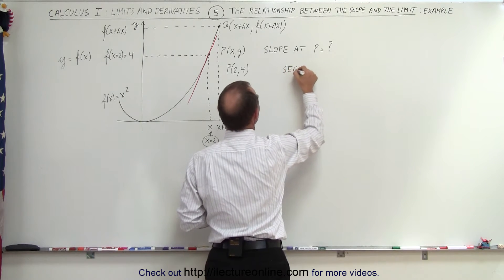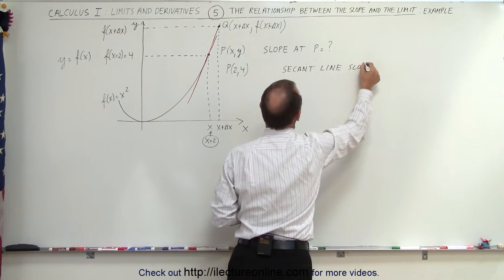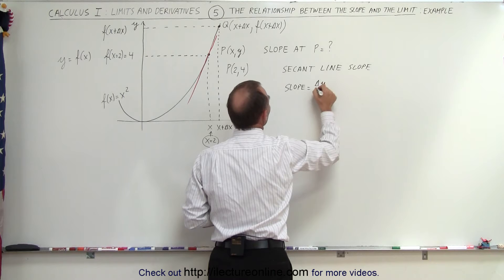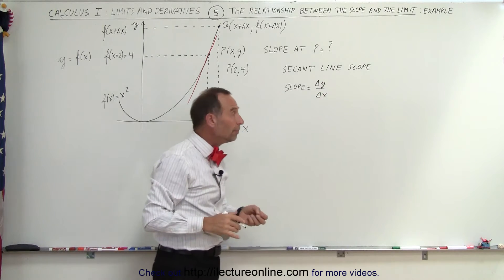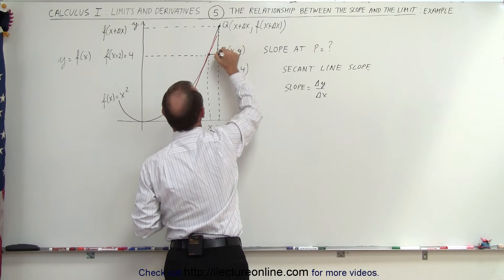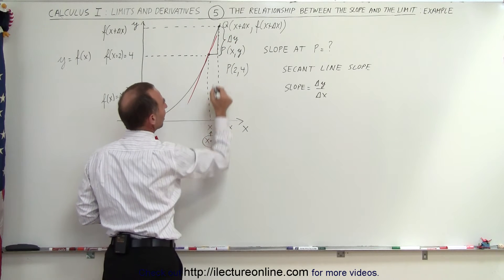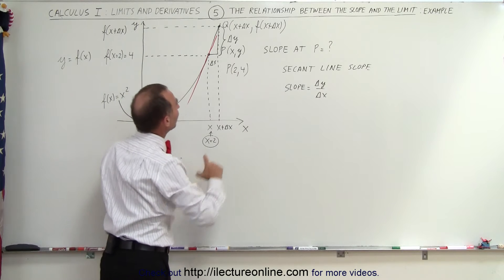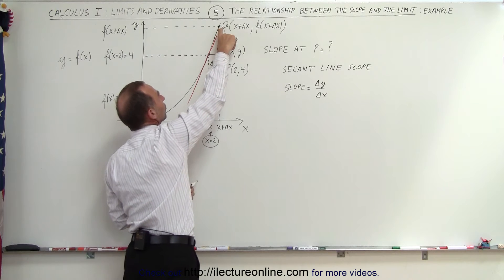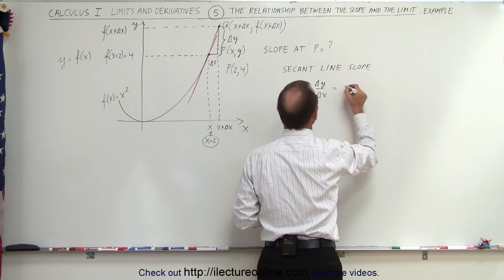So we're going to calculate the slope of the secant line. The secant line slope is equal to the change in y over the change in x — that's the rise over the run. The change in y is this distance here, which I'll draw as a little triangle — this is delta y. And this distance here is the change in x, delta x. So the slope of the secant line between P and Q equals delta y over delta x.